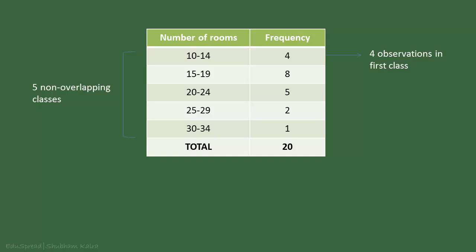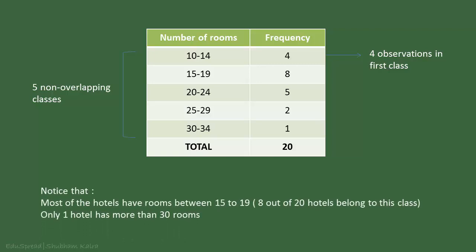This frequency distribution is more revealing than the ungrouped frequency distribution. Here we can observe that most of the hotels have rooms between 15 to 19 and there is only one hotel that has more than 30 rooms. Other conclusions are also possible depending on the interest of the person viewing the frequency distribution. It is important to note that there are some principles that you should keep in mind while forming a grouped frequency distribution. These principles will guide you in deciding how many classes to form, what should be the size of class intervals, and many other things. I have covered these principles in my next lecture.